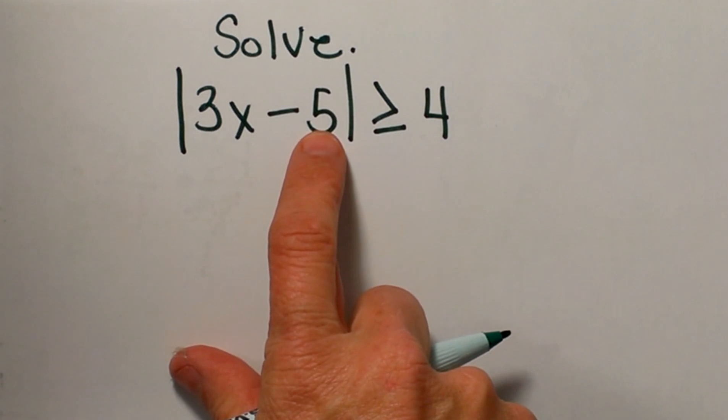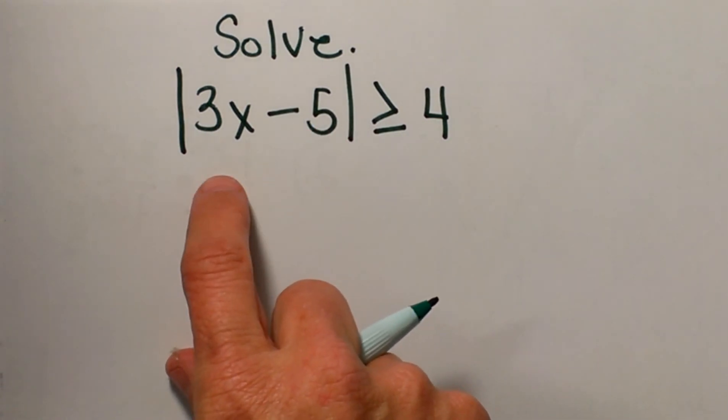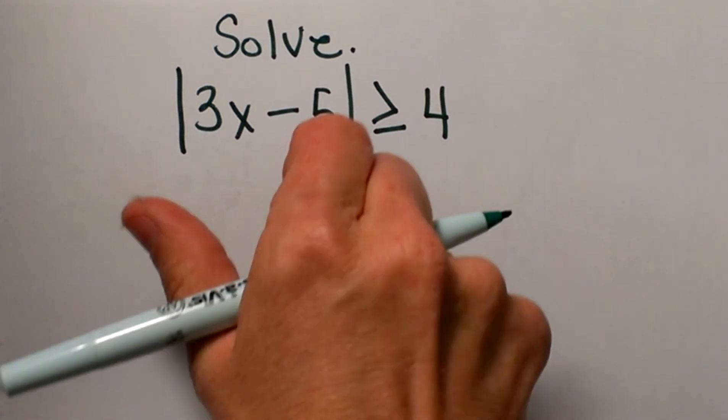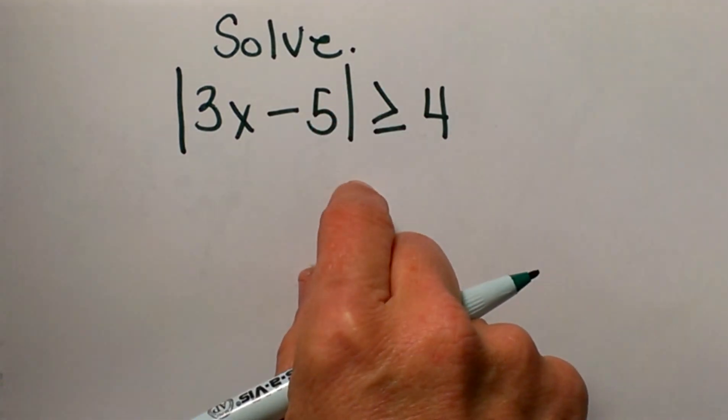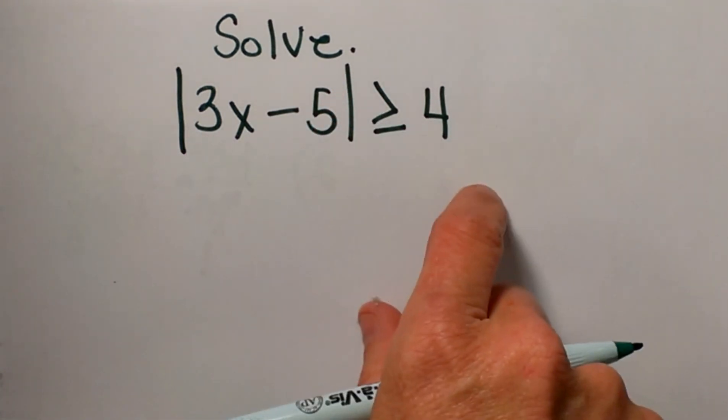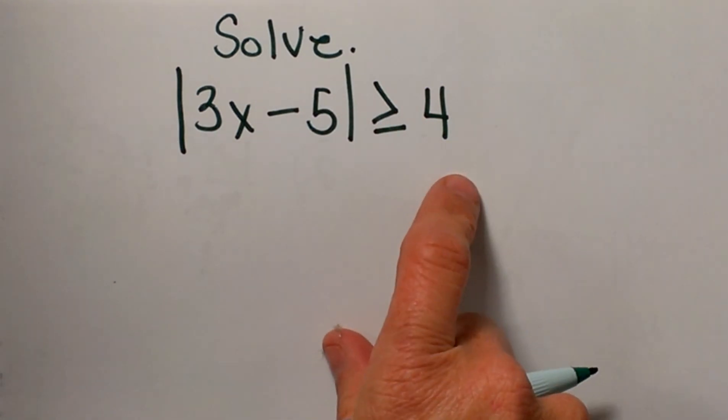Remember, inequalities don't have one exact answer. Typically inequalities have a shaded region left and right, or in the center between two points, and when you get those shaded regions you can always test to check your work.